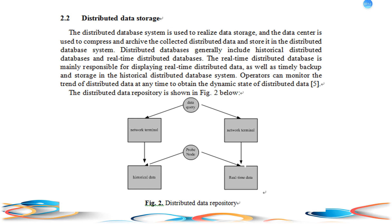Distributed databases generally include historical distributed databases and real-time distributed databases. The real-time distributed database is mainly responsible for displaying real-time distributing data, as well as timely backup and storage in the historical distributing database system. Operators can monitor the trend of distributing data at any time to obtain the dynamic state of distributed data. The distributed data repository is shown in Figure 2.